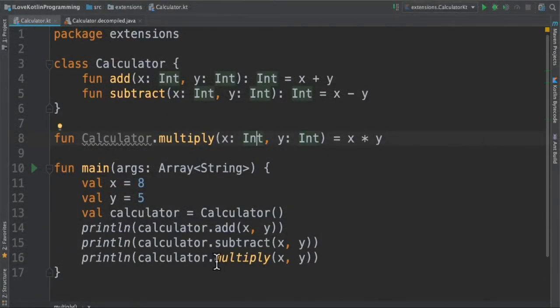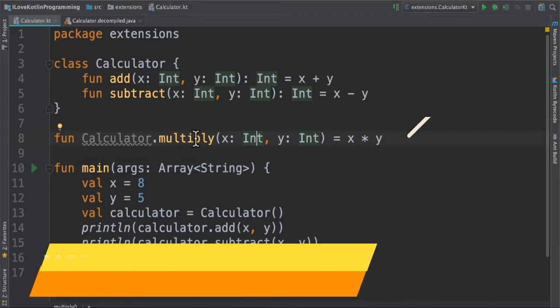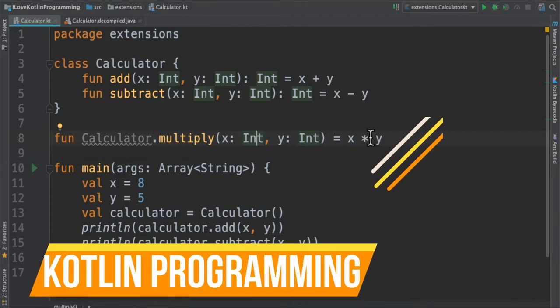For example, I would like to add another function called multiply to the calculator class where I don't have the source code. So what I do is create an extension function: class name dot multiply with the parameters and the logic.